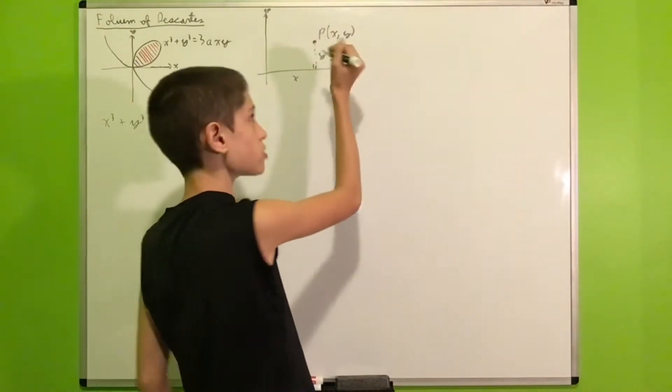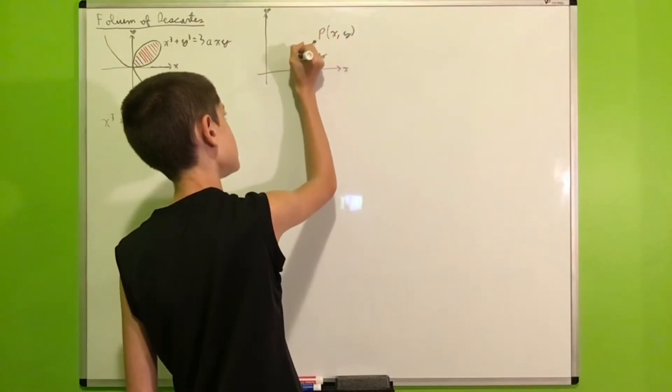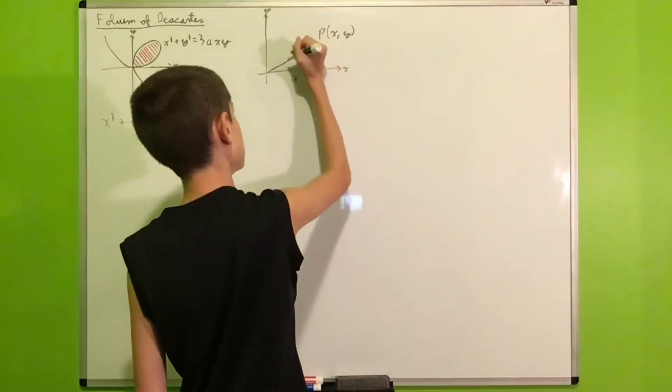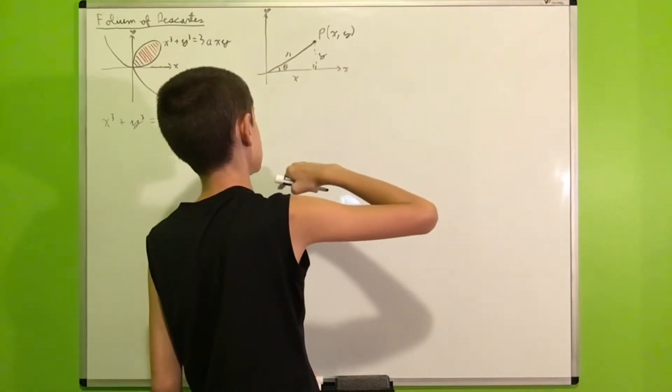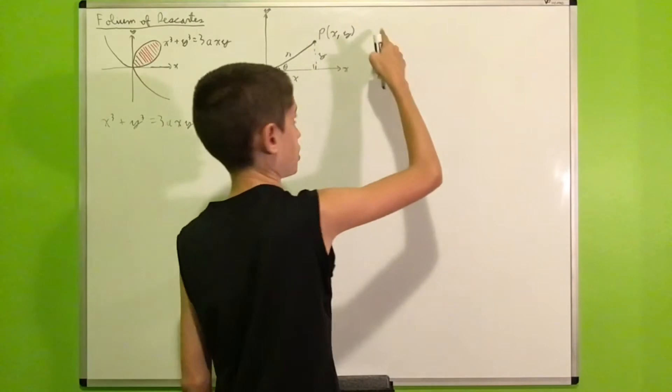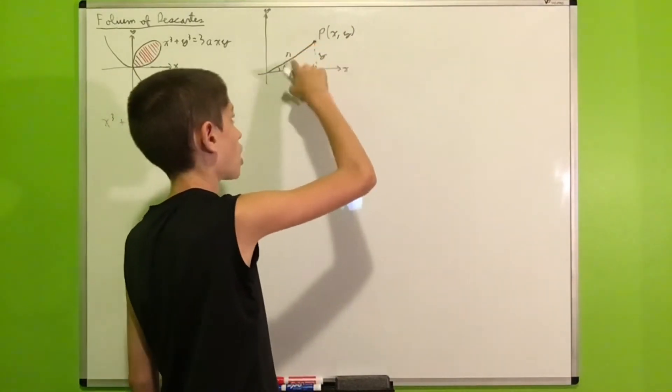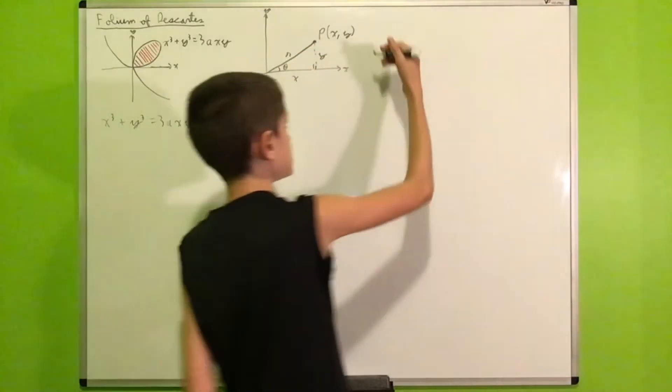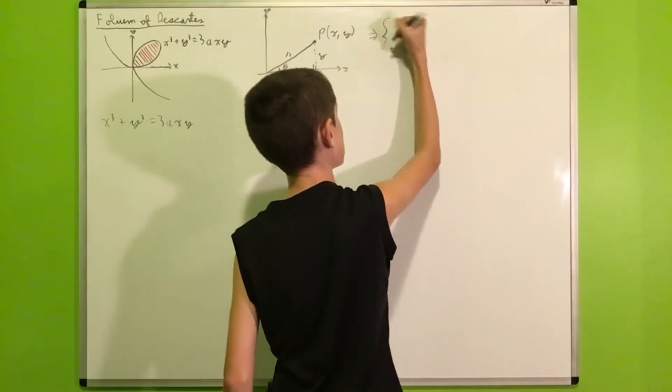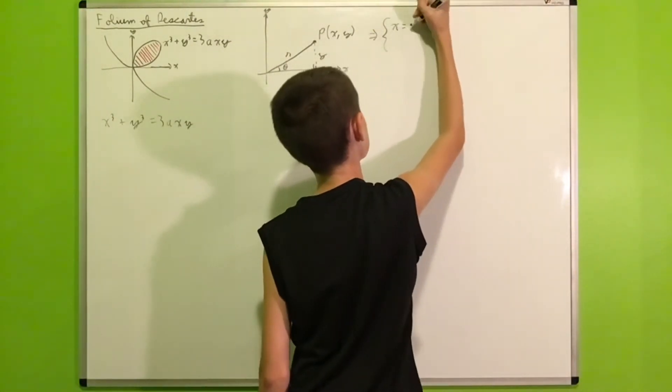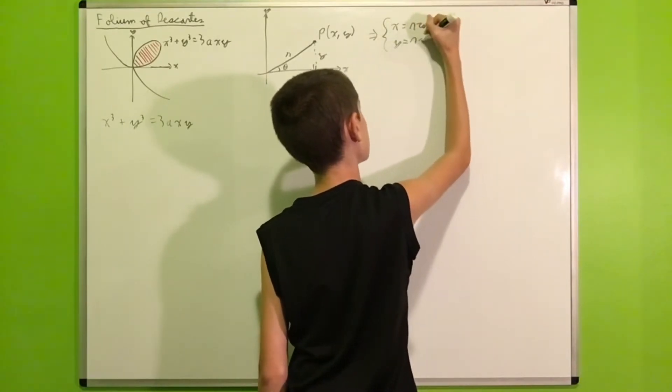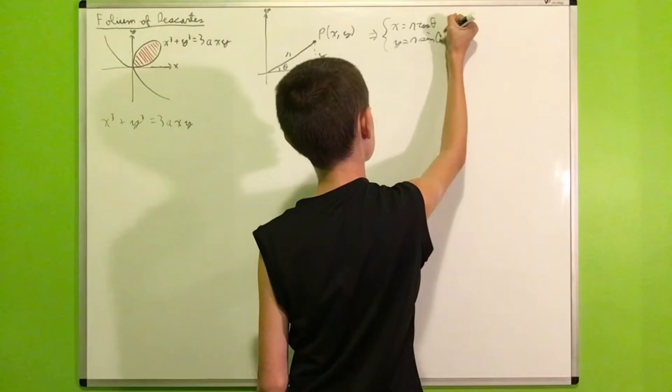Next, we'll draw the segment connecting the origin and P. This segment will have a length R and we'll make an angle of theta with the positive x-axis. So the polar coordinates of P are R, theta. So this means that from this diagram, we can see that applying trigonometric ratios, we get that x equals R cosine theta and y equals R sine theta.